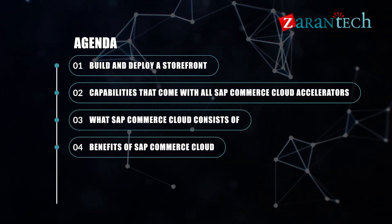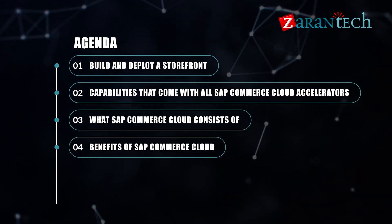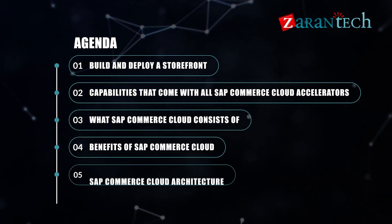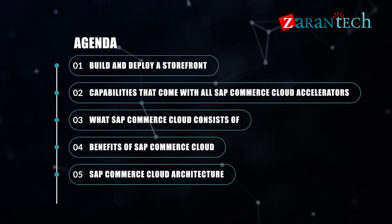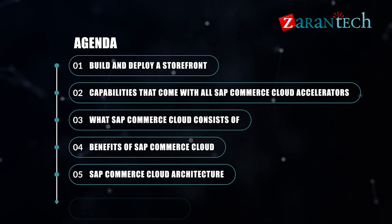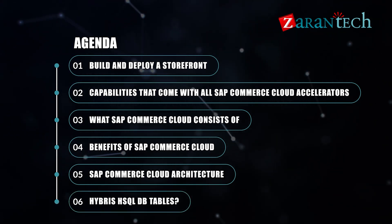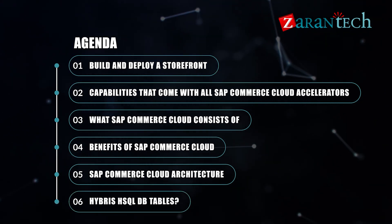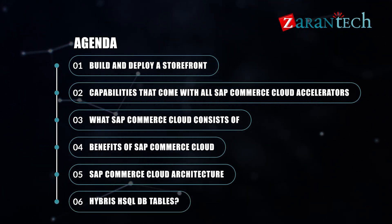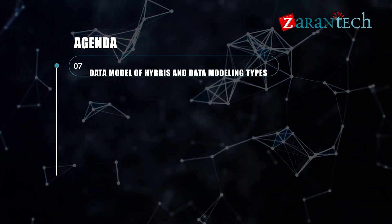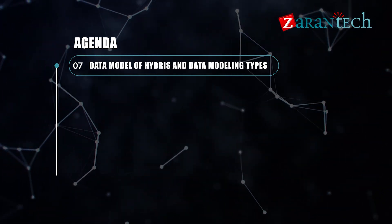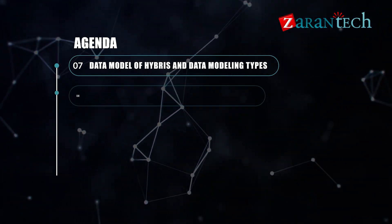Item 4: Benefits of SAP Commerce Cloud. Item 5: SAP Commerce Cloud Architecture. Item 6: Hybris HSQL DB Tables. Item 7: Data Model of Hybris and Data Modeling Types.